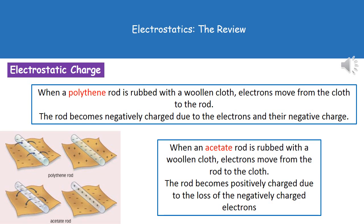The second example is an acetate rod being rubbed with that woollen cloth. In this instance, the acetate rod is going to lose electrons to the cloth. Because the rod has lost electrons it becomes positive, and because the woollen cloth has gained electrons it becomes negative.